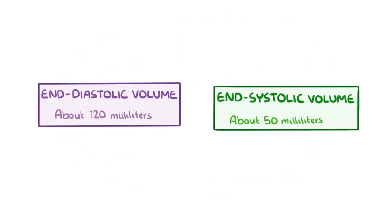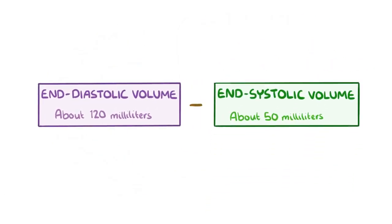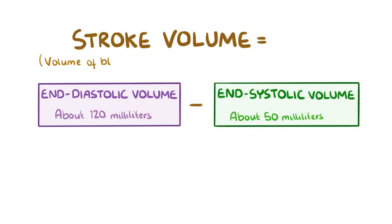So, end-diastolic volume minus end-systolic volume gives us the stroke volume, which is the volume of blood that the left ventricle ejects with every heartbeat or stroke. In this case, the stroke volume is 120 minus 50, which equals 70 milliliters.